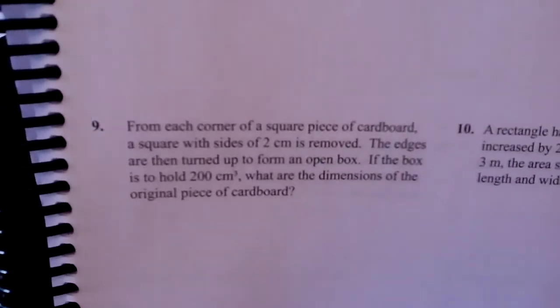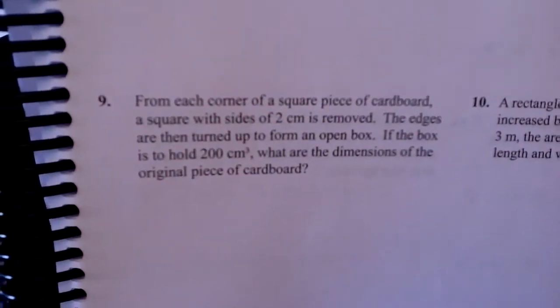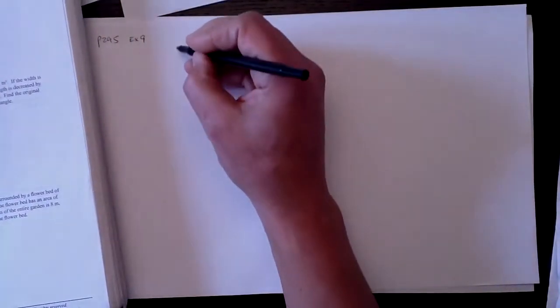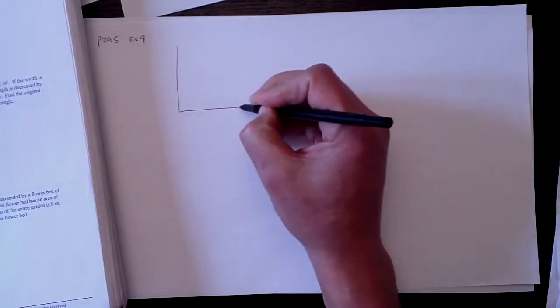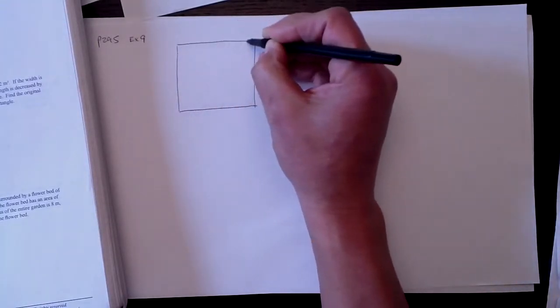It's a good thing to maybe highlight what are the dimensions of the original piece of cardboard, because we're going to actually solve for x, which is not going to be the original dimensions. But anyways, let's just start with a little diagram here. First of all, it's a square, and we know the property of a square is that length and width are all exactly the same.